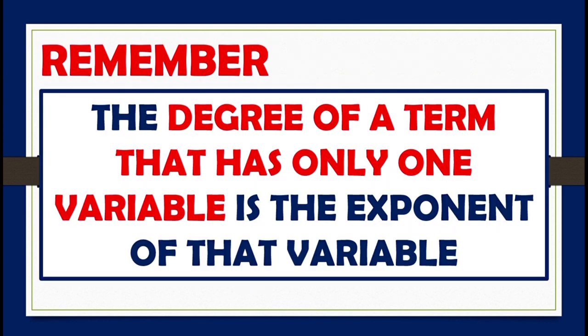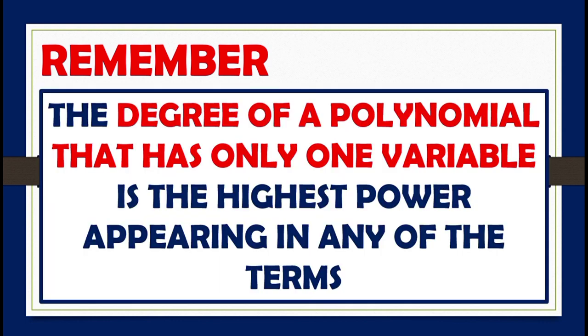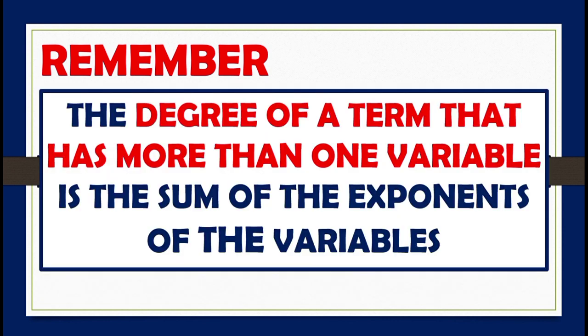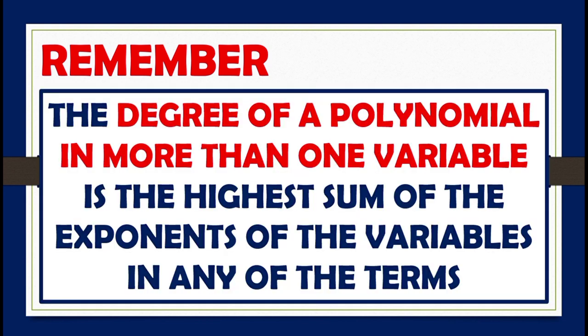Remember: the degree of a term with only one variable is the exponent of that variable. The degree of a polynomial with only one variable is the highest power appearing in any of the terms. The degree of a term with more than one variable is the sum of the exponents of the variables. And the degree of a polynomial in more than one variable is the highest sum of the exponents of the variables in any of the terms.